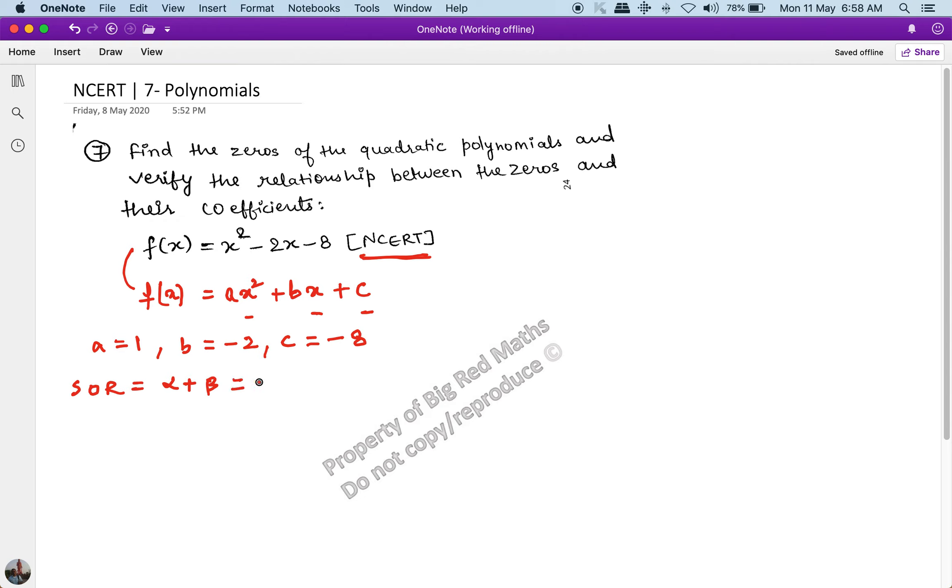Going by this concept, -b/a is -(-2)/a, which is 1, so this should be equal to 2.